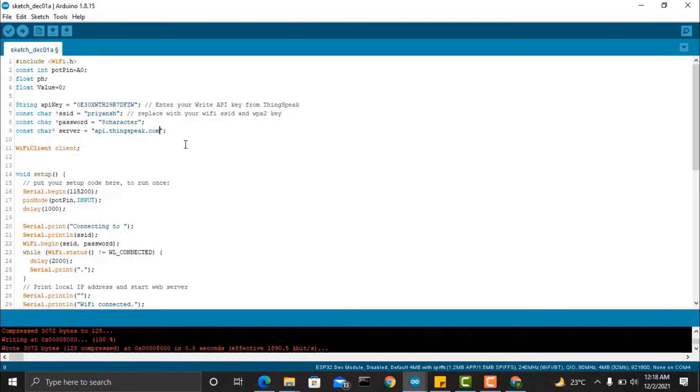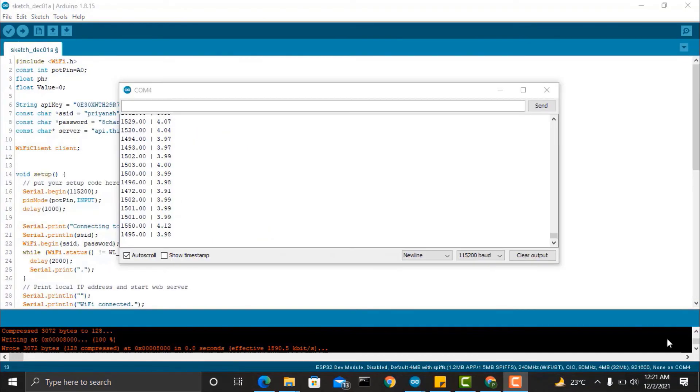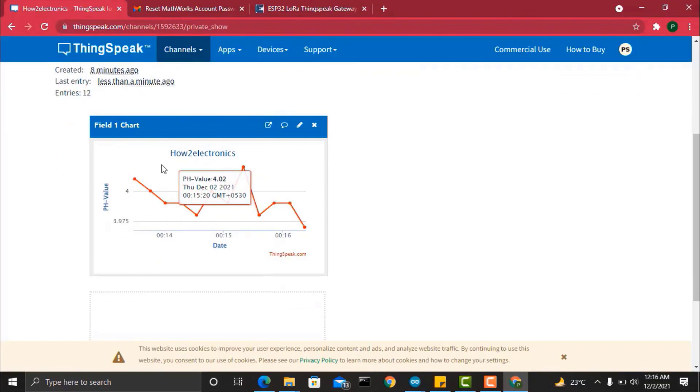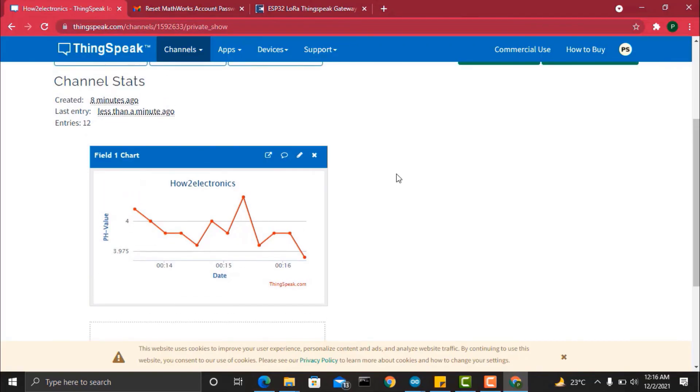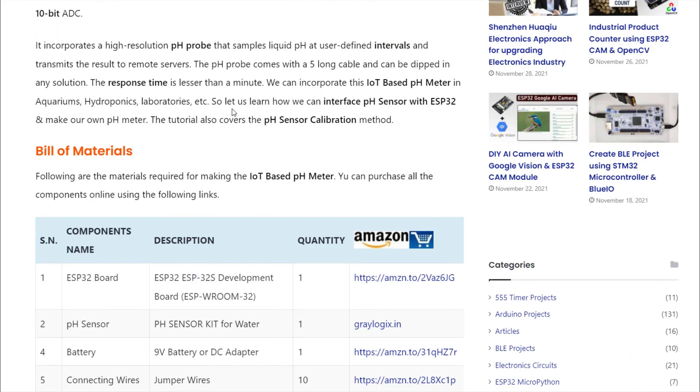The rest of the thing doesn't need any changes. So after uploading the code, the serial monitor still shows the value of pH of lemon. Now move to the ThingSpeak dashboard and go to the private view of your channel. So here you can see the pH value being uploaded on the ThingSpeak dashboard in graphical format. So this is how you can monitor the pH of any liquid online from any part of the world.